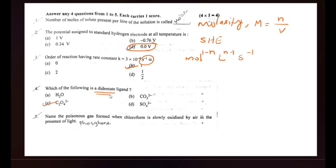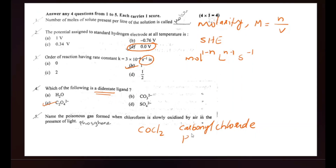When chloroform is slowly oxidized by air in the presence of light, it forms a toxic gas — carbonyl chloride (COCl₂), also known as phosgene. That is the product. This is your answer.